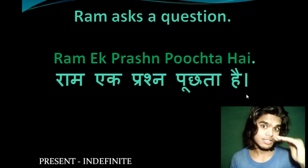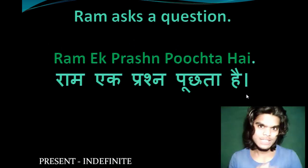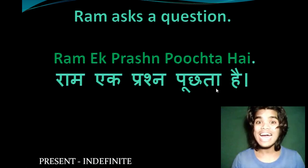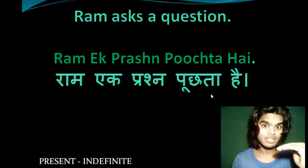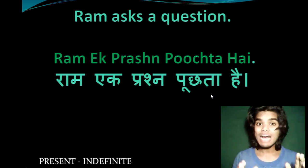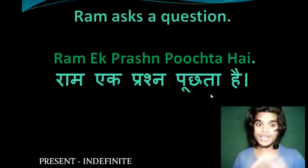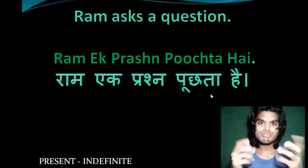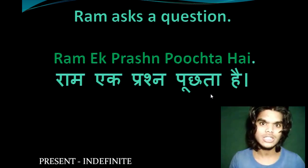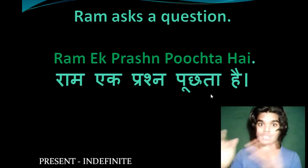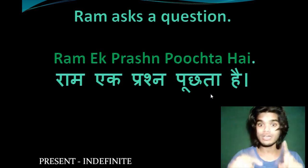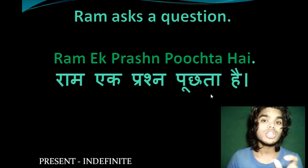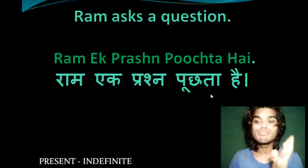Example: 'Ram asks a question.' This is simple present — present indefinite form. In this form, as I told you, 'ta/ti/te' comes, and 'hai' represents present. So: 'Ram ek prasna poochta hai.' Here 'ek' means one, 'prasna' means question. You can also say 'sawaal.' 'Prasna uttar' means question-answer; 'sawaal jawab' is the same. So 'sawaal' or 'prasna' means question, and 'uttar' or 'jawab' means answer.